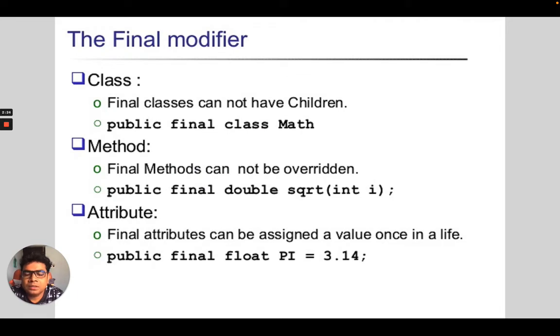So the final is a keyword, it's kind of modified, which can be used with class method and attribute variable. Final class cannot have a children. Final methods cannot be overridden. And in case of variable attributes, final attributes can be assigned a value once in a lifetime. After that, it cannot be changed. You can see in this sample, how it can be done public final float pi, then public final double in the case of method. And in case of class, just before the class keyword, you can use the final keyword.